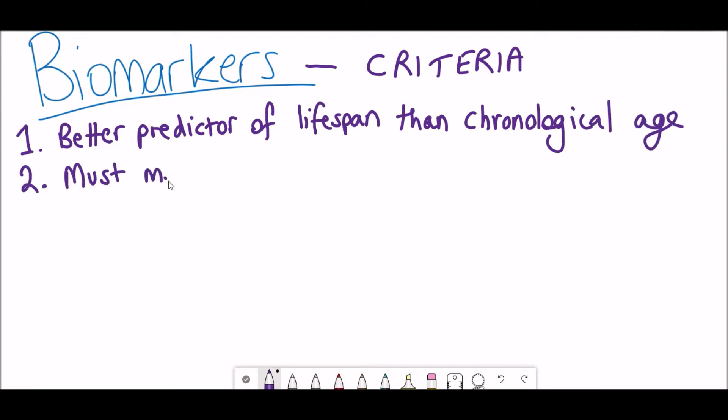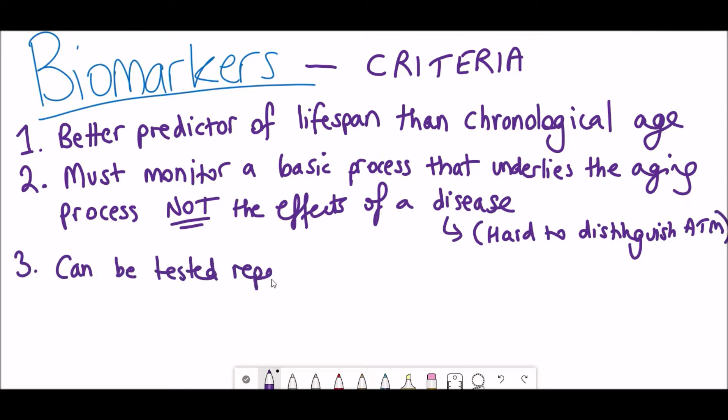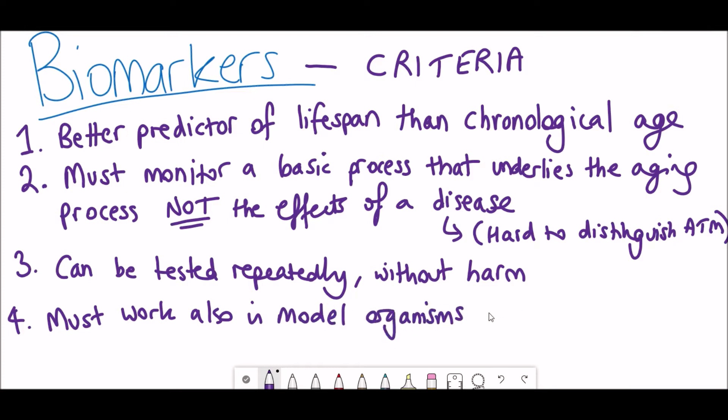These criteria include the biomarkers being a better prediction of lifespan than chronological age, and it must be able to monitor a basic process that underlies the aging process, not just the effects of disease. This is a challenging one because it can be quite hard to distinguish the effects of chronic diseases from normal aging. It must also be something that we could test repeatedly without causing harm to the patient, and lastly it must also work in model organisms as a biomarker of age so that any interventions could first be tested in them before being applied to human testing.